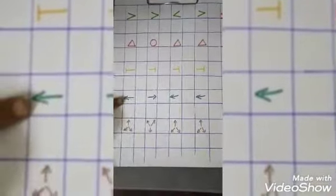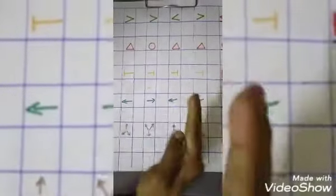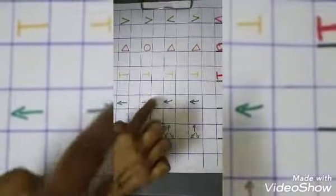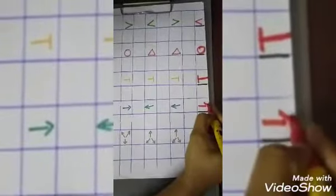Now, see this arrow mark. All this is pointing towards this side. This is the only one which is pointing towards that side. So, this is different.